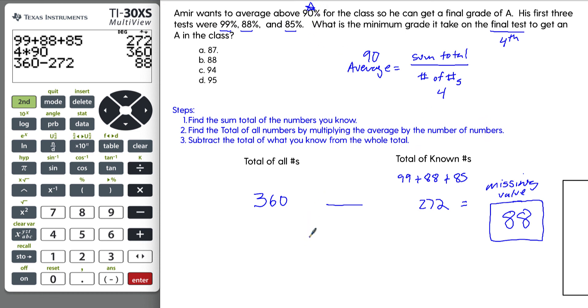So Khan Academy does this really well. I've linked to the find the missing value given the mean. Really encourage you, this is one of those skills that it's asked very straightforward on the GED, at least every time I've ever seen it. So if you really practice this, I think it's a high leverage skill that you can really improve your score with. So good luck.